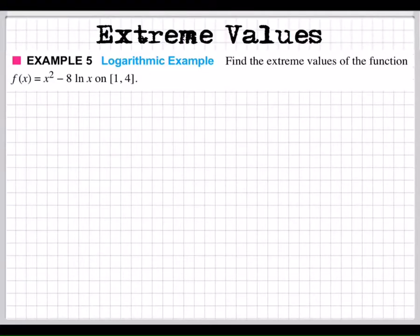Alright, let's find the extreme values of this function. Now we have f, we know we're going to have to do f of 1 and f of 4. How do I know? Because they're in our interval. We have a closed interval, so that means we're going to have to test those points on the outside.